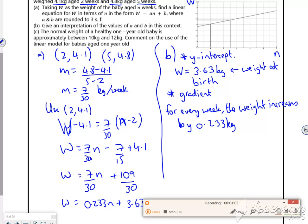So the Y intercept is its weight at birth. So 3.63 kilos. And for every one week, the weight increases by 0.233 kilos. That's the effect of the gradient.